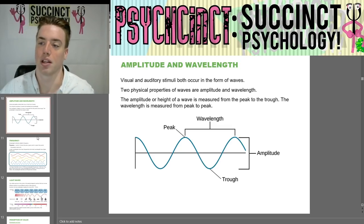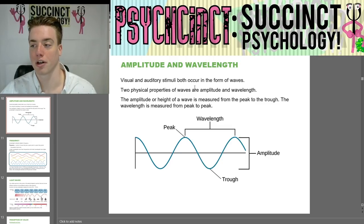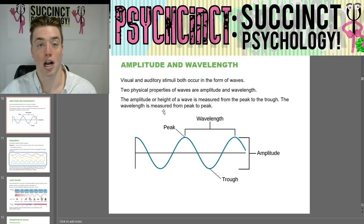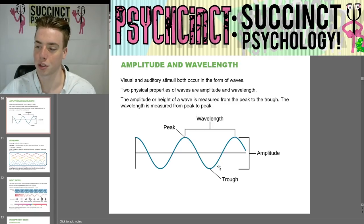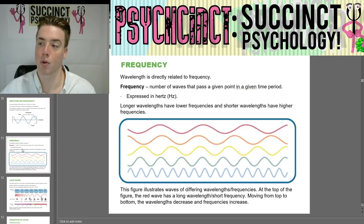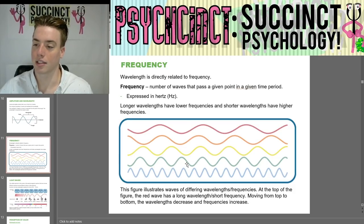We'll finish up with amplitude and wavelength. Visual and auditory stimuli both occur in the form of waves. Two physical properties of waves are amplitude and wavelength. The amplitude, or height of a wave, is measured from the peak to the trough. The wavelength is the distance from peak to peak. We will go more into wavelengths, starting with frequency, in the next video.